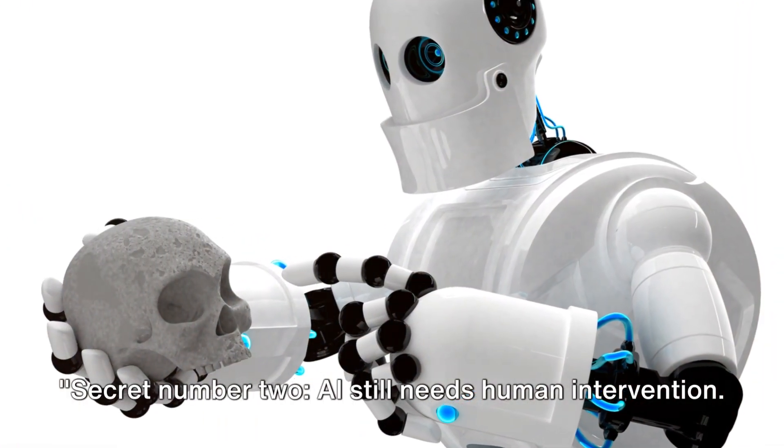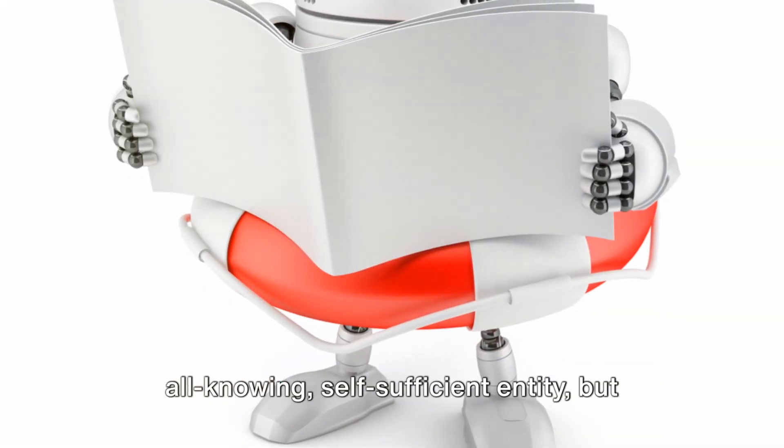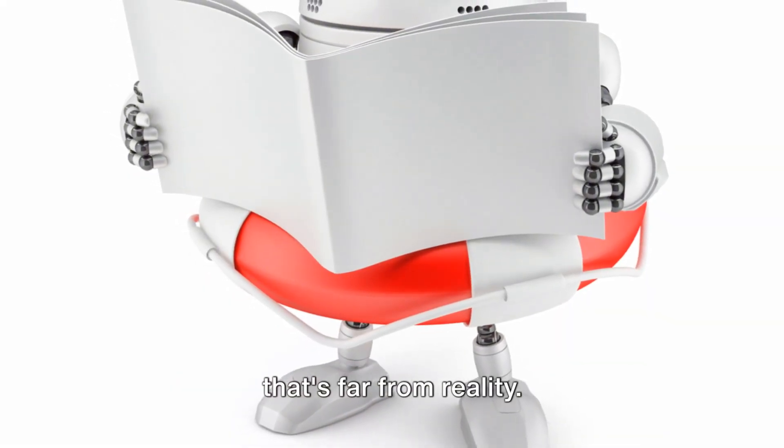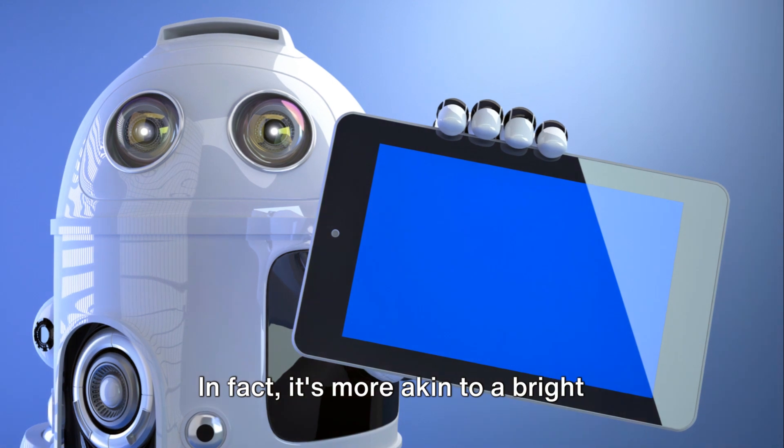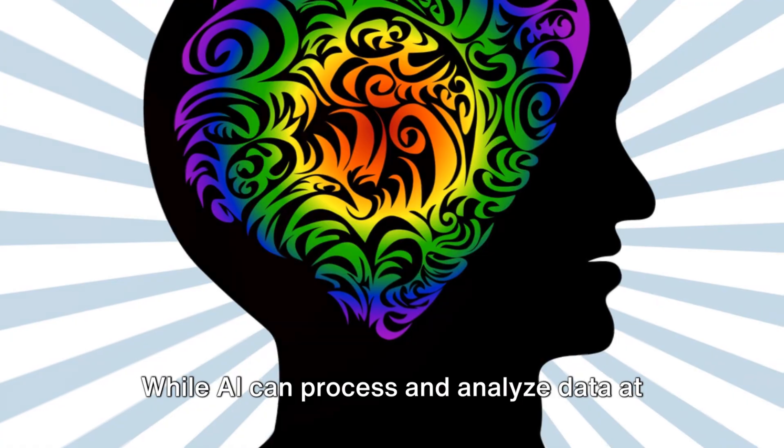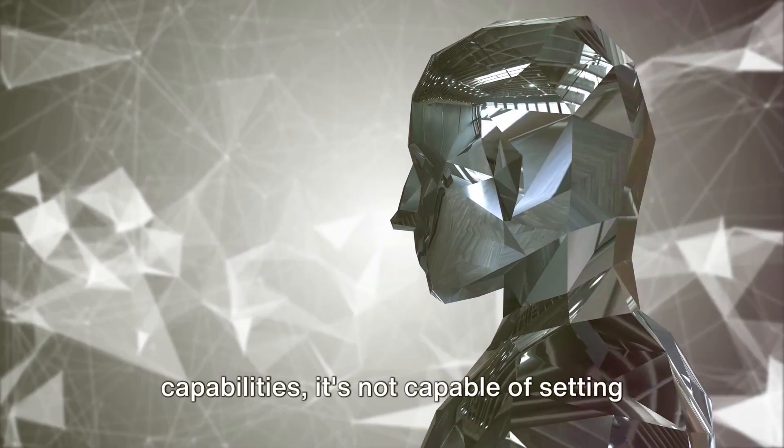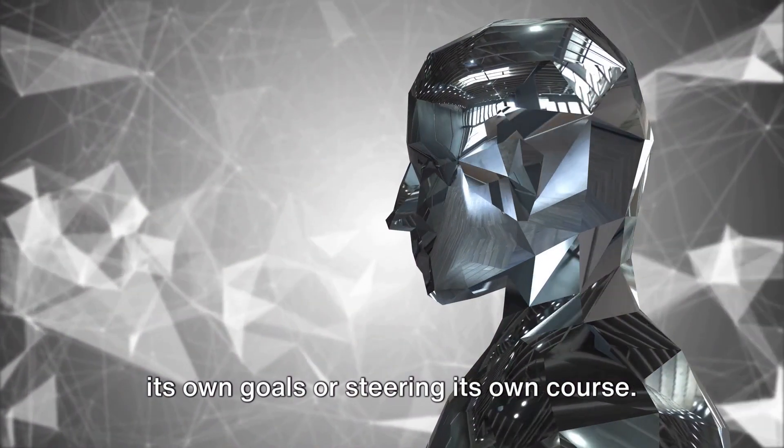Secret number 2: AI still needs human intervention. You might be imagining AI as an all-knowing self-sufficient entity, but that's far from reality. In fact it's more akin to a bright student, eager to learn but in need of a guiding hand. While AI can process and analyze data at a speed and scale beyond human capabilities, it's not capable of setting its own goals or steering its own course.